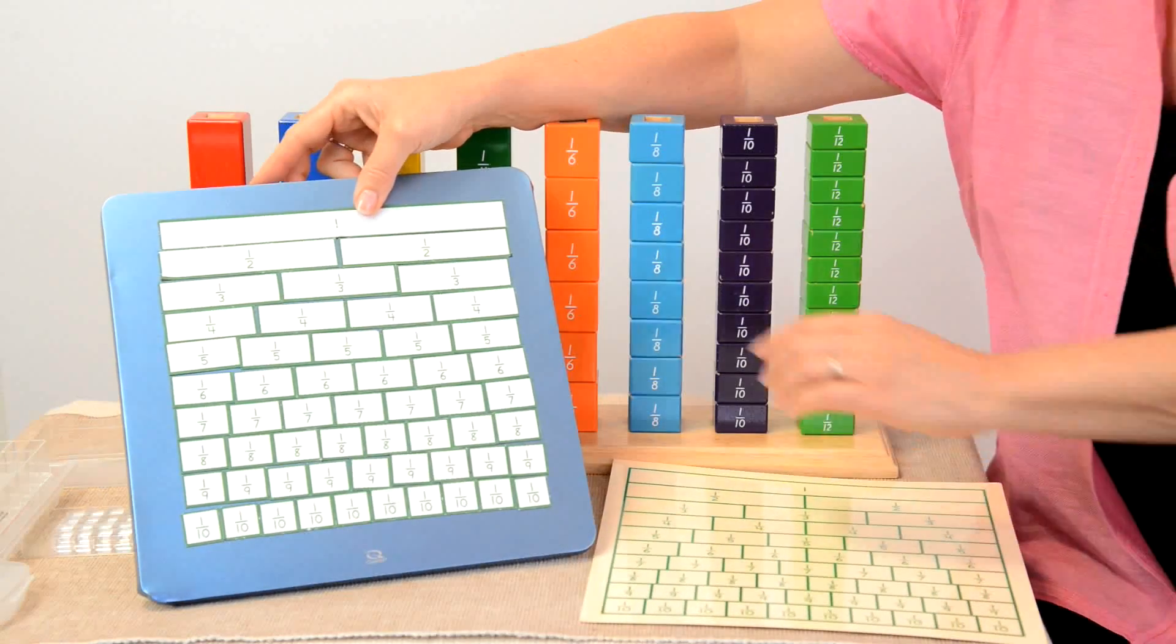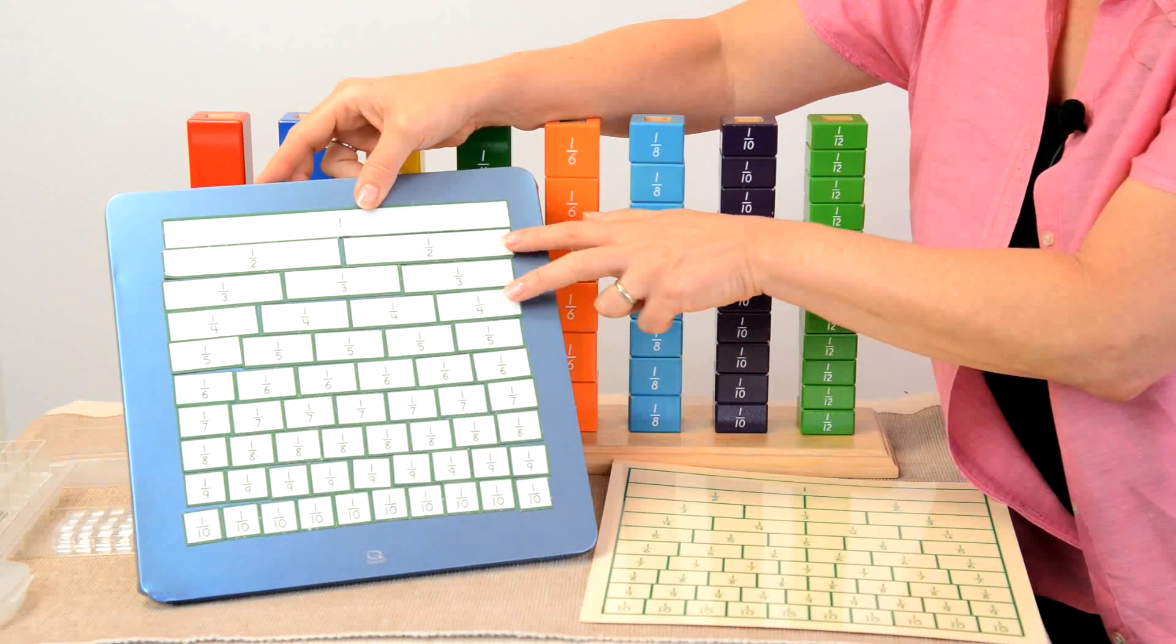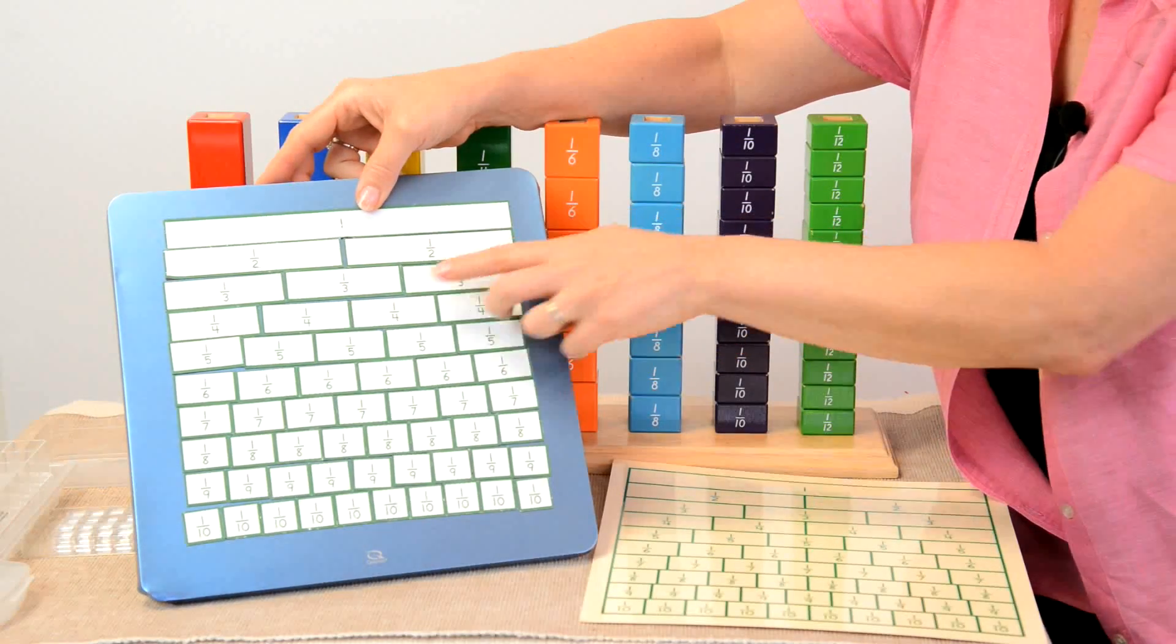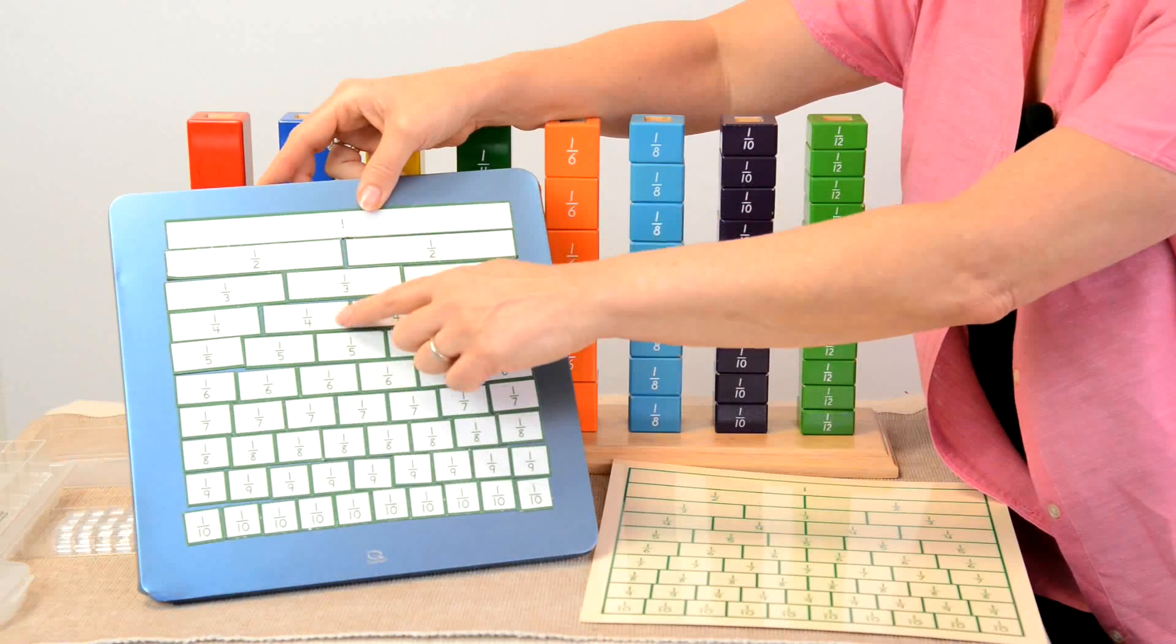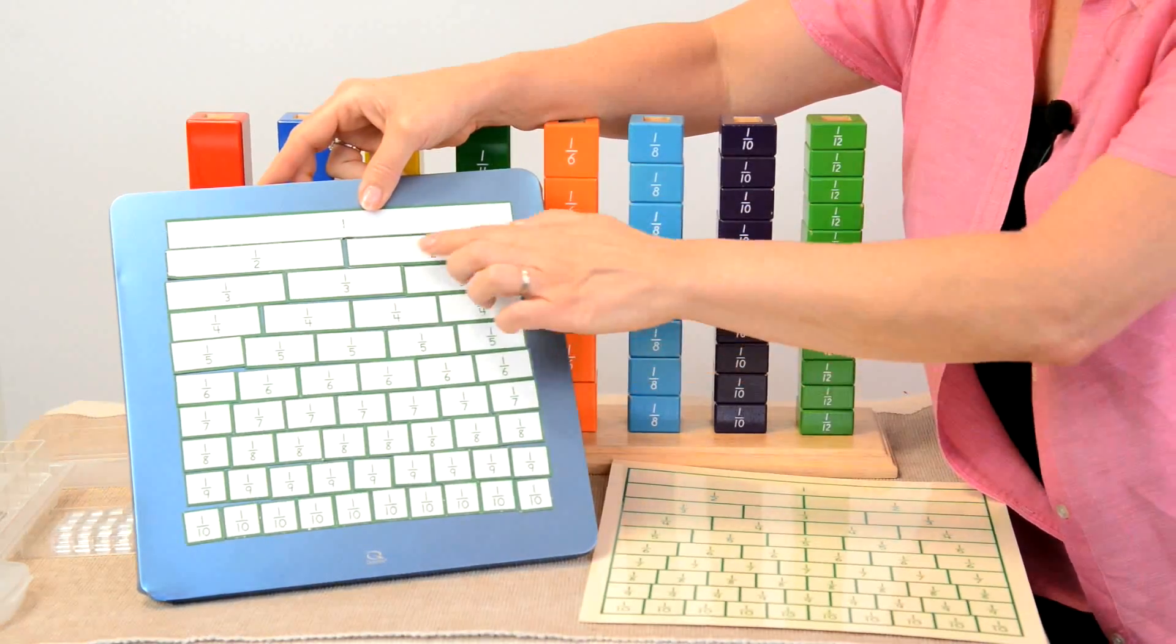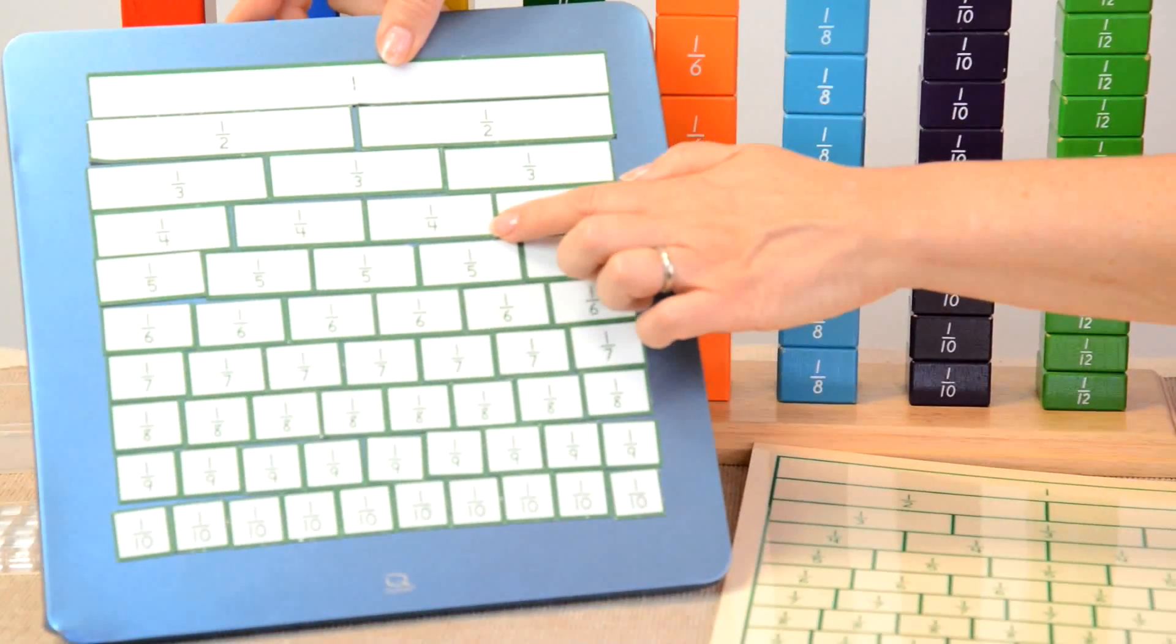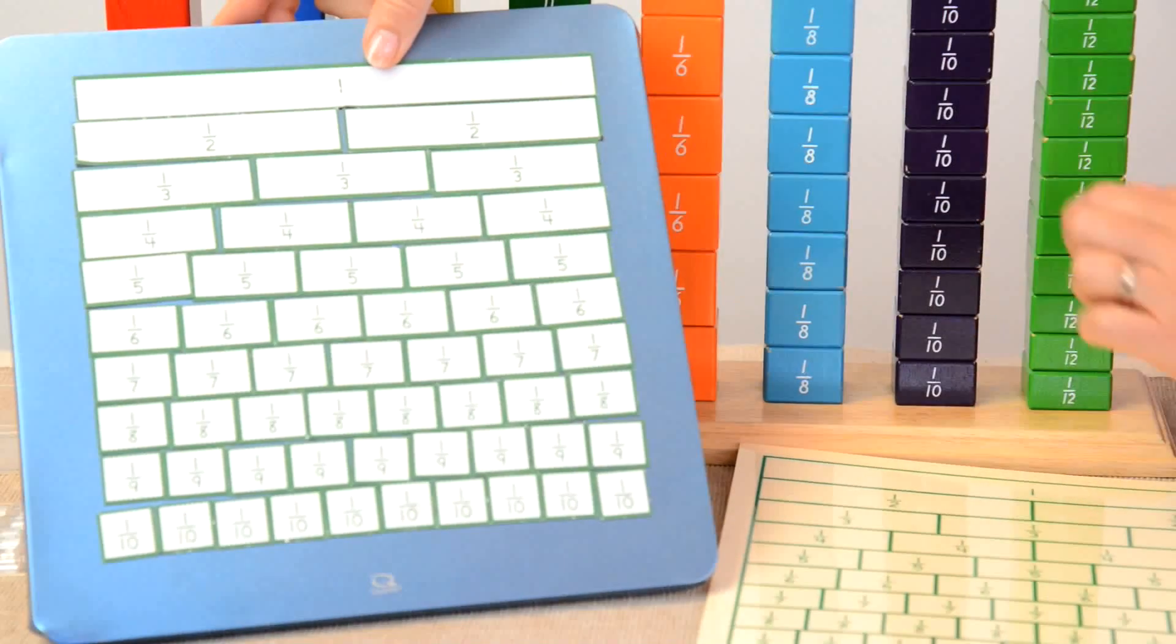What you will notice immediately is that it's very easy to see equivalents. You can look at the one-half and the two-fourths and if you've worked with them even a few times you would just at a glance be able to see that equivalent that one half is exactly the same as two-fourths.